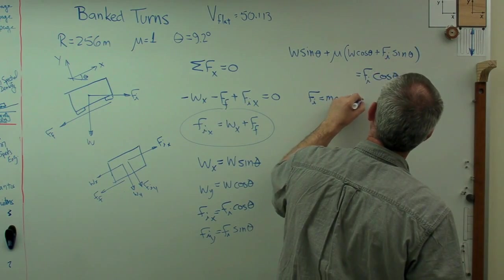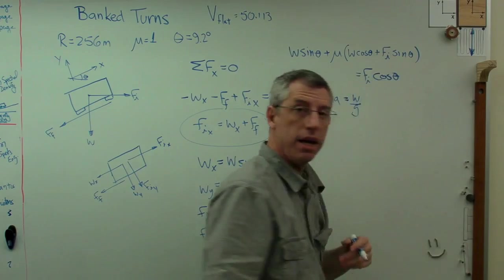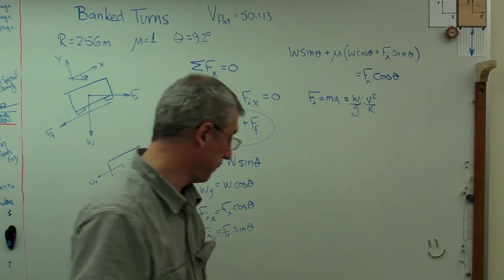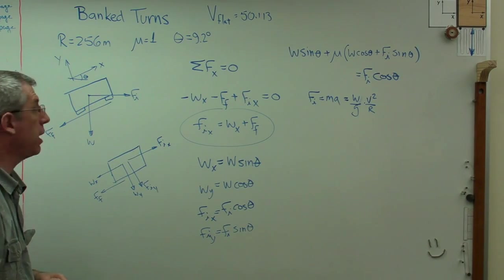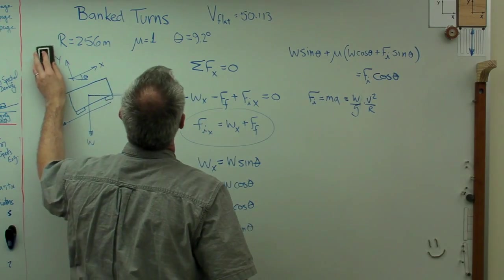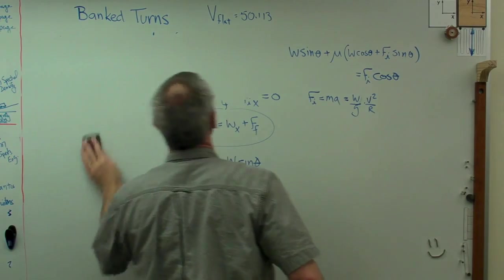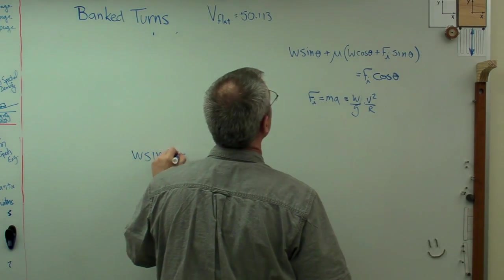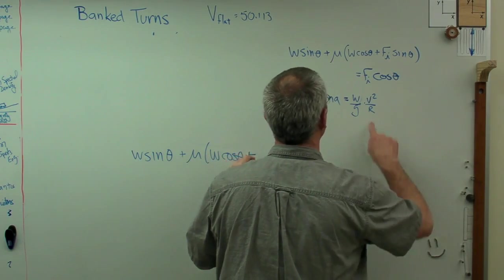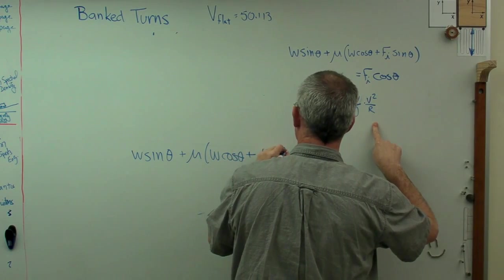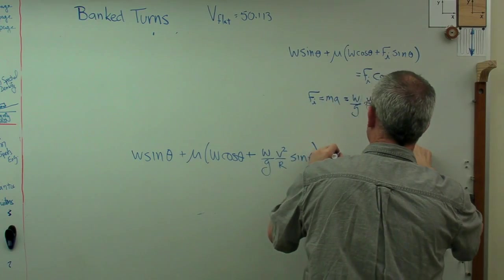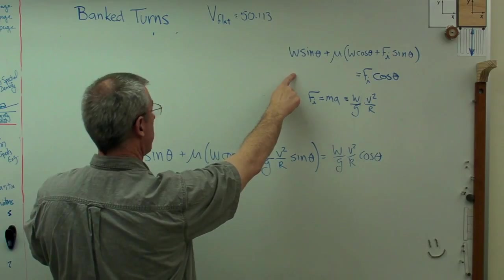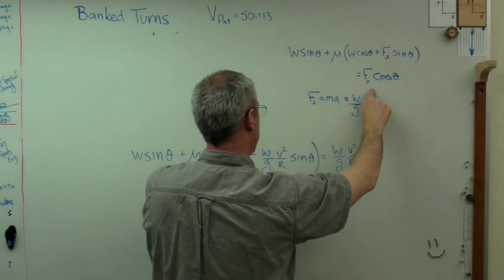F_i equals ma, just like it did before. Mass equals w over g and a equals v squared over r. Let me get out of frame for a second so you can do a screenshot. Let's see, w sine theta plus mu w cosine theta plus f_i which is w over g times v squared over r sine theta equals w over g times v squared over r cosine theta. Let's double check this and make sure we've got our w sine theta, got that, w over g sine theta, looks like we've got it.